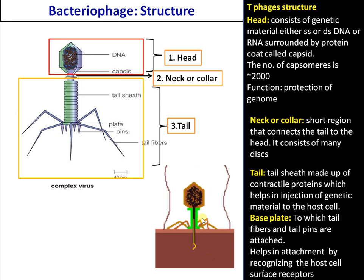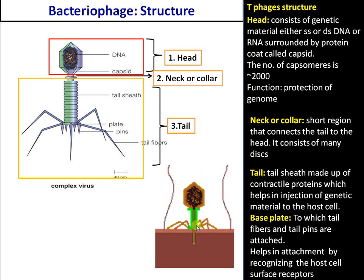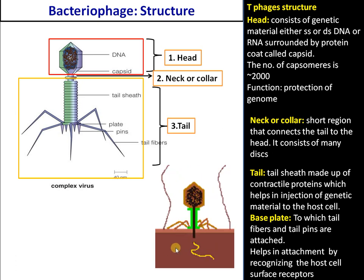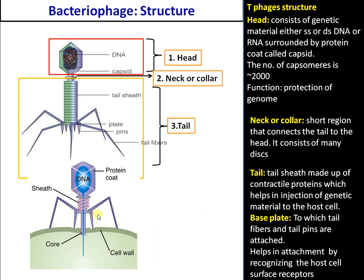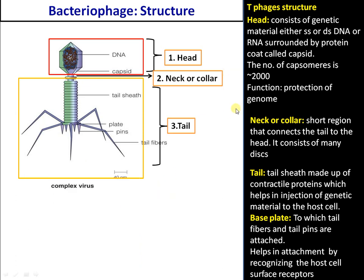The tail sheath is made up of flexible proteins, and contraction of these proteins results in injection of genetic material into the bacterial cell. The tail fibers are capable of recognizing specific cell receptors on the bacterial cell surface, and this binding to the surface receptors helps in attachment of the bacteriophage to a specific bacterial species.